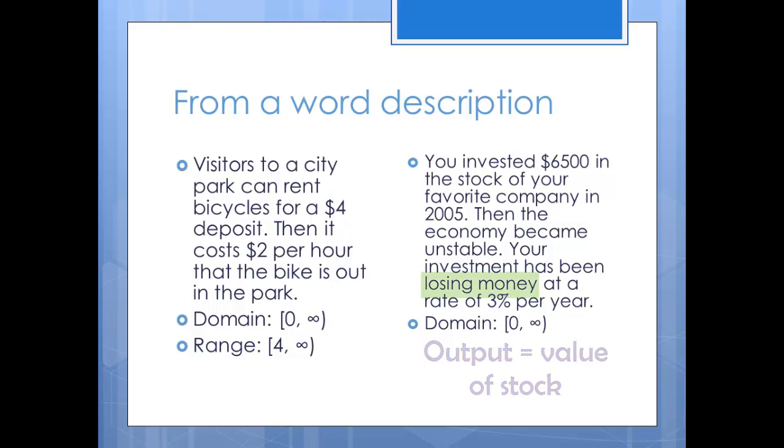The range will be how much money your stock is worth. You're losing money on the stock so it won't ever be higher than the $6500 you started at. It also won't ever go any lower than zero dollars. You have lost all of your money. The range is then between zero and $6500. Decimals make sense here because you're losing a percentage and not a constant rate of change. So it is possible to have decimals for your money amounts.